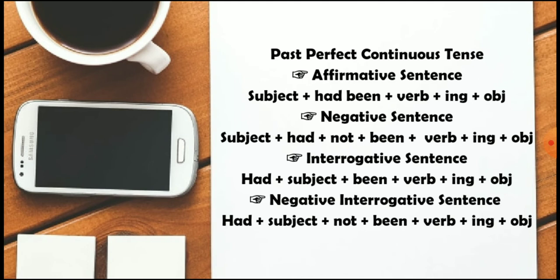Here are some formulas of the past perfect continuous tense. Formula number one is the affirmative sentence. We will use subject — subject can be he, she, it, I, we, they, you — then 'had been' as the helping verb, plus verb plus '-ing' (for example, play becomes playing, study becomes studying), plus object (such as garden or football). For the negative sentence, we use subject plus 'had not been' plus verb plus '-ing' plus object.